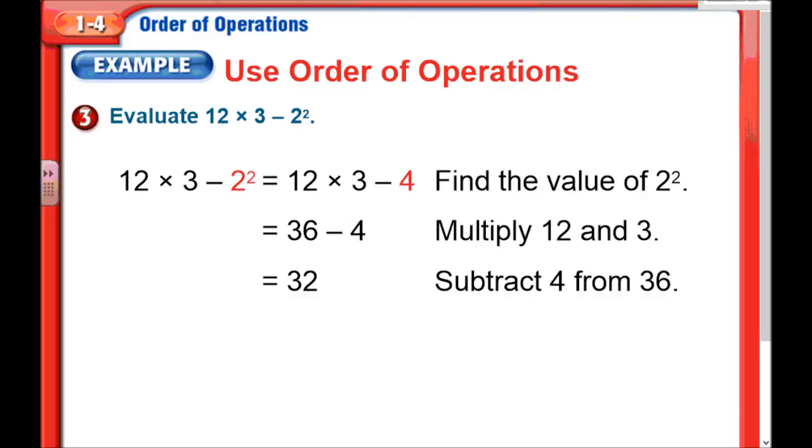Another example. Looks like they're going to include exponents now. 12 times 3 minus 2 squared. First step is to find the value of 2 squared. They did that right here for us. 2 squared is 2 to the second power, which means you're multiplying 2 twos together, which is 4. Now we're going to multiply the 12 and the 3. So 12 times 3 is 36. Bring down that minus 4. And finally, we finish by subtracting 4 from 36, and we end up with our 32.